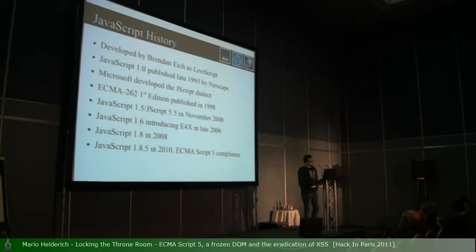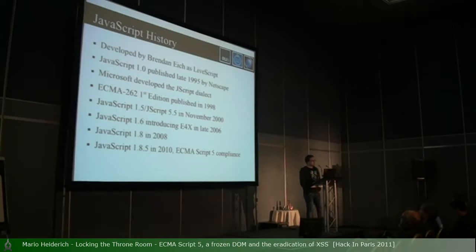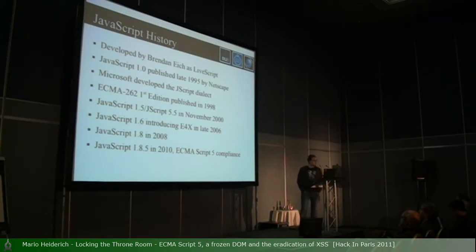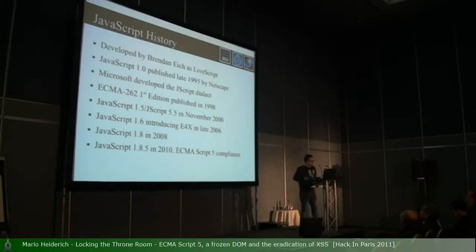After some years, in 1998, the ECMAScript first edition was published, standardizing JavaScript and defining rules for how JavaScript interpreters should handle things. Two years later, JavaScript 1.5 came out, and synchronously JScript 5.5 was released. In 2006, six years after that, JavaScript 1.5 was apparently very sufficient for most developers. They released JavaScript 1.6, which introduced a major novelty still not implemented in any browser.